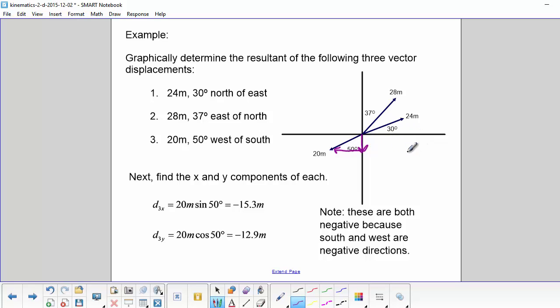So in order to remember, you would use SOH CAH TOA. So remember, sine of the angle goes with opposite over hypotenuse. And cosine of the angle goes with adjacent over hypotenuse.